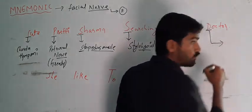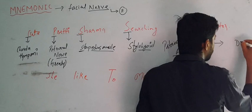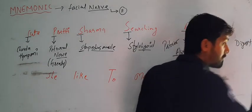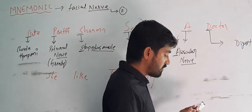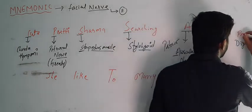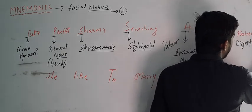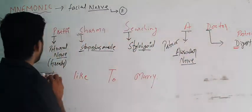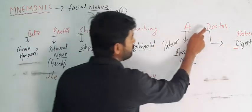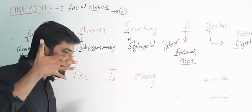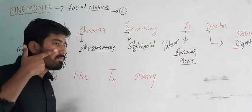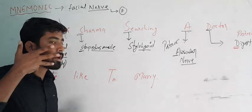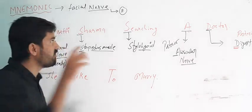And D means what? D means Digastric. The digastric muscle is there — but remember, this is for the posterior belly of digastric, not the anterior. So D means digastric. So that gives us 6 branches: 1, 2, 3, 4, 5, 6. And then there are 5 terminal branches: temporal, zygomatic, buccal, mandibular, and cervical. So 5 terminal and 6 others — 'Cute Preeti Sharma searching a doctor,' branches done.